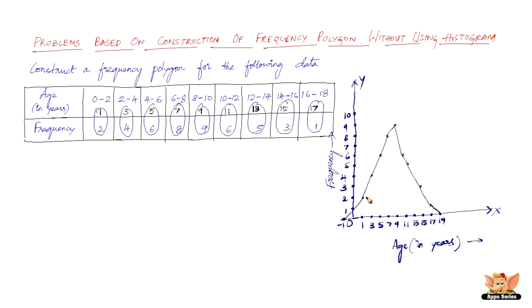Now let us label all the plotted points: (1, 2), (3, 4), (5, 6), (7, 8), (9, 9), (11, 6), (13, 5), (15, 3), (17, 1), (19, 0), and not to forget the imaginary point (minus 1, 0).